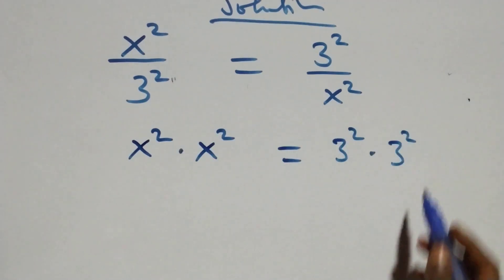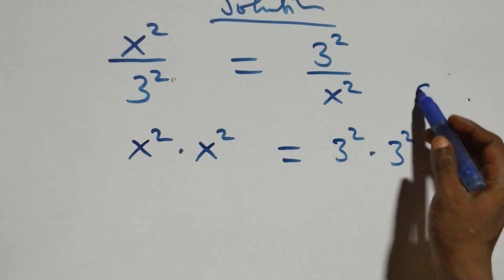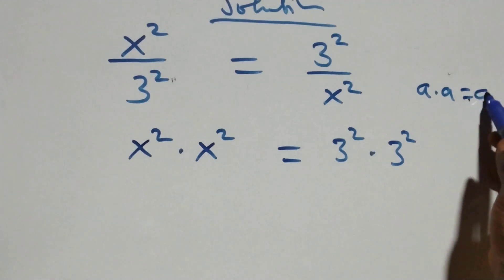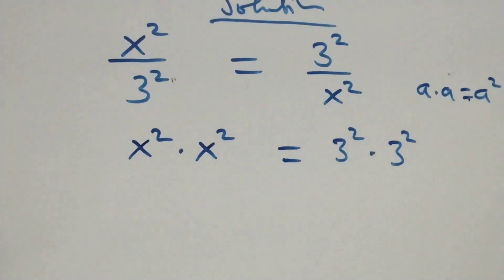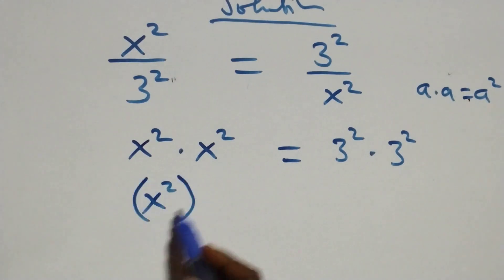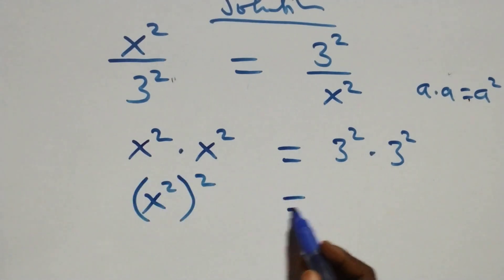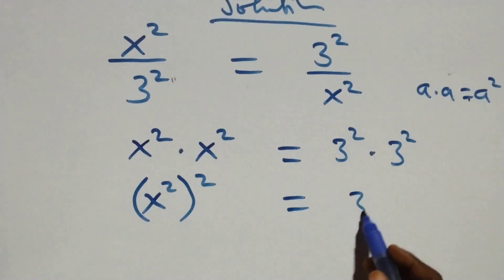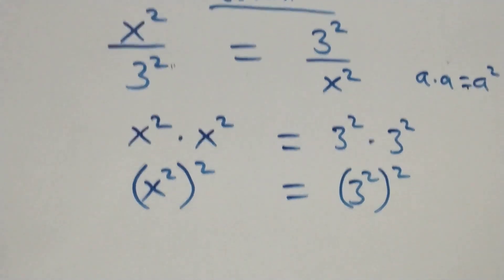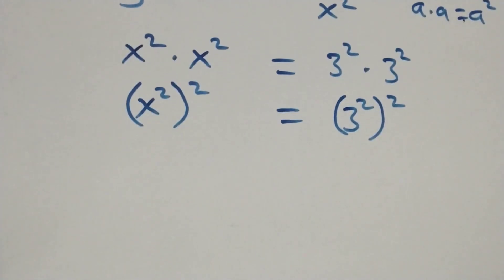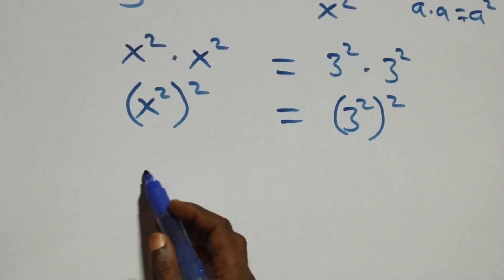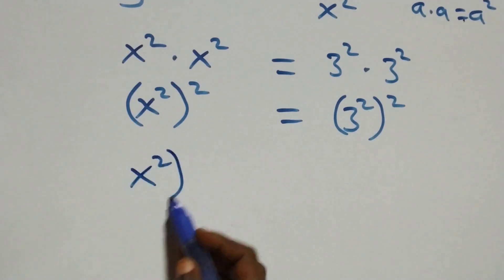We also note that multiplying the same thing, like a times a equals a squared. So here we can write this as a squared times a squared. This gives us x squared times x squared, which we can take to the left hand side as x squared or square.